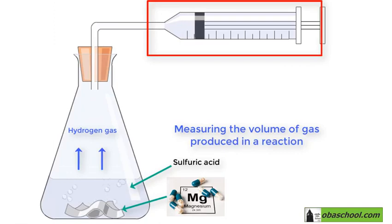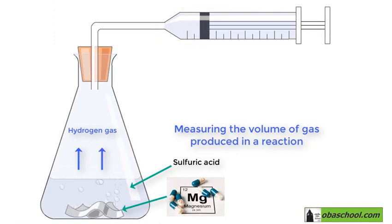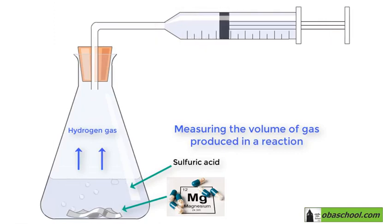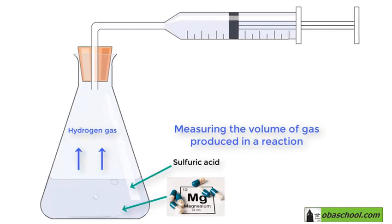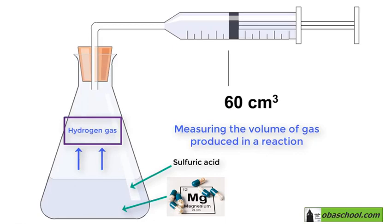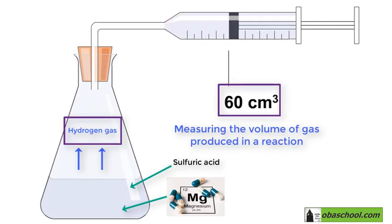The reaction is taking place and the produced gas is filling the syringe. The volume of hydrogen gas formed in this reaction is 60 centimeters cubed. A syringe can help us to measure the volume of gas produced in a reaction.